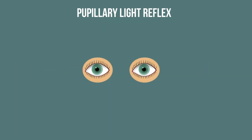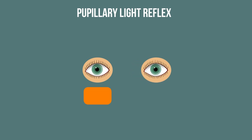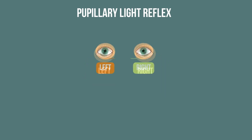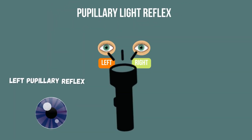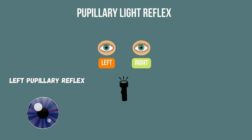Now, the pupillary reflex is conceptually linked to the side — either left or right — of the reacting pupil, and not to the side from which light stimulation originates. Left pupillary reflex refers to the response of the left pupil to light, regardless of which eye is exposed to a light source.